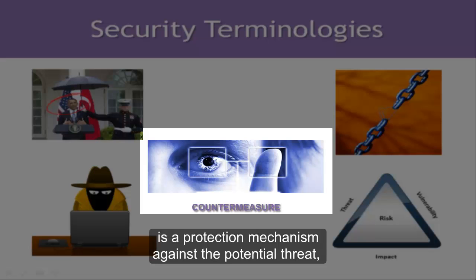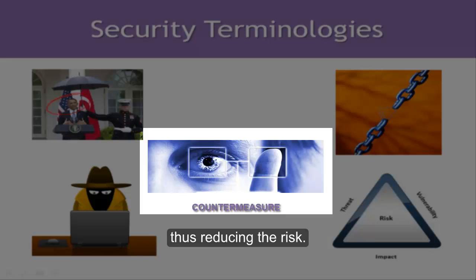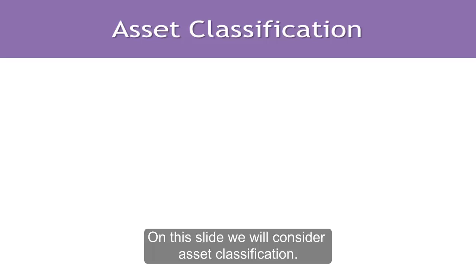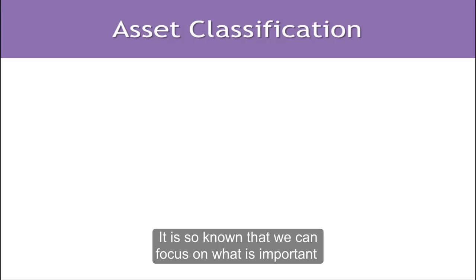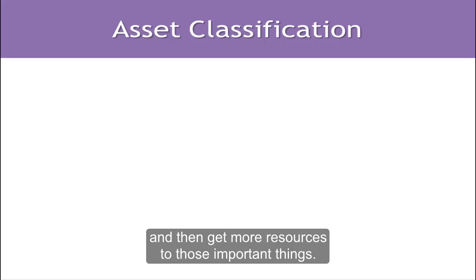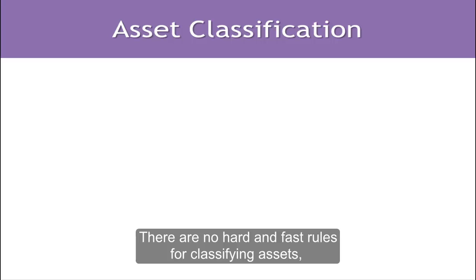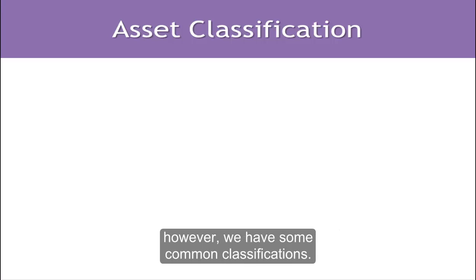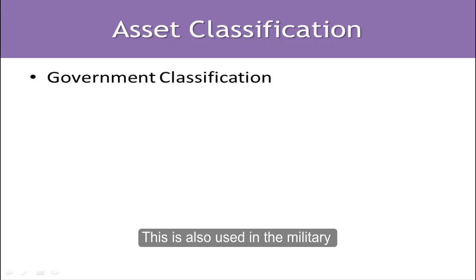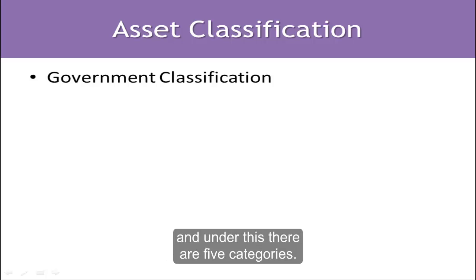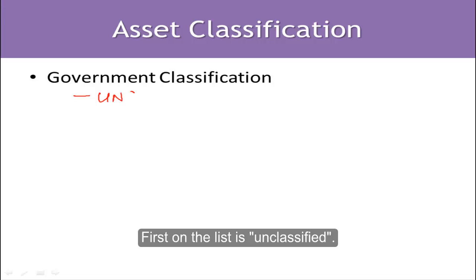On this slide we will consider asset classification. Why do we classify assets? It is so that we can focus on what is important and dedicate more resources to those important things. There are no hard and fast rules for classifying assets, however we have some common classifications. The first is government classification, also used in the military, and under this there are five categories. The first is unclassified.